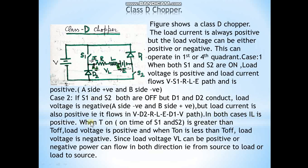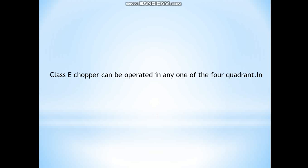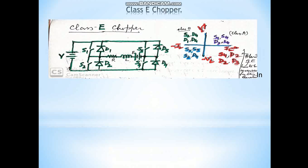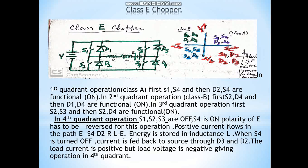When the on-time of the thyristor switch S1 and S2 is greater than the off-time, load voltage is positive. When on-time is less than off-time, load voltage is negative. Since load voltage V_L can be positive or negative, power can flow in both directions — that is, from source to load or load to source.